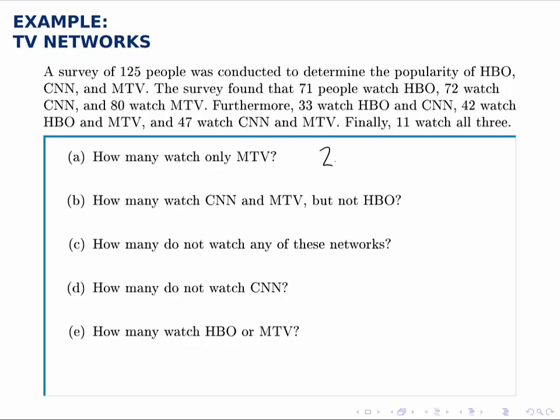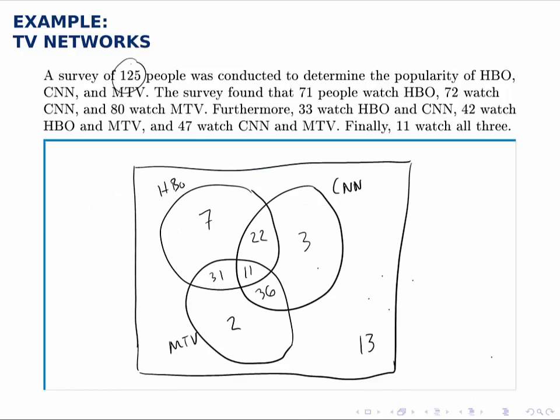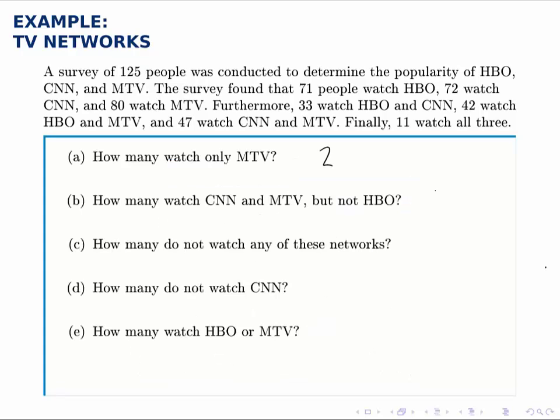Then, how many watch CNN and MTV? That would be the intersection of CNN and MTV, but outside HBO. The intersection of CNN and MTV has these 11 and these 36, but it's the 36 who are outside HBO while still being in the intersection between CNN and MTV. So that would be 36.